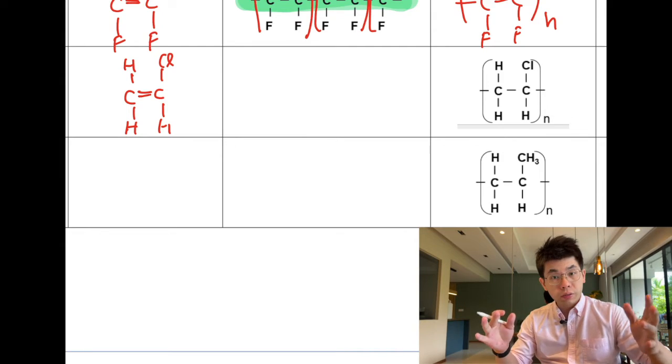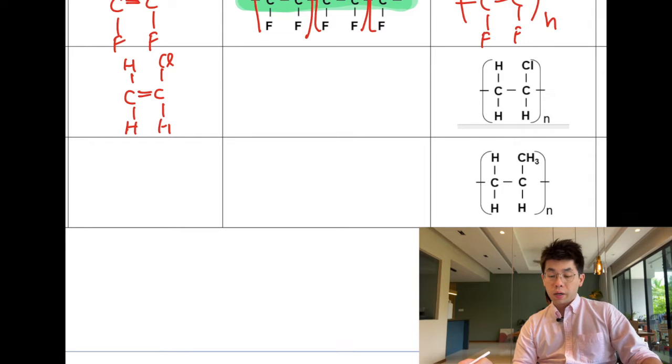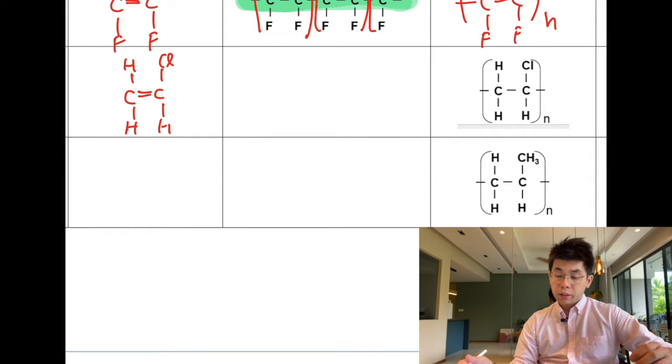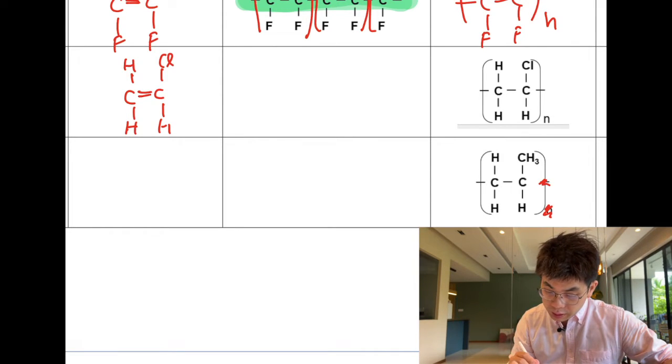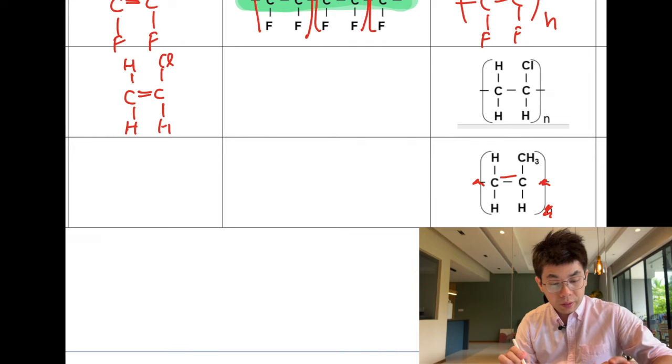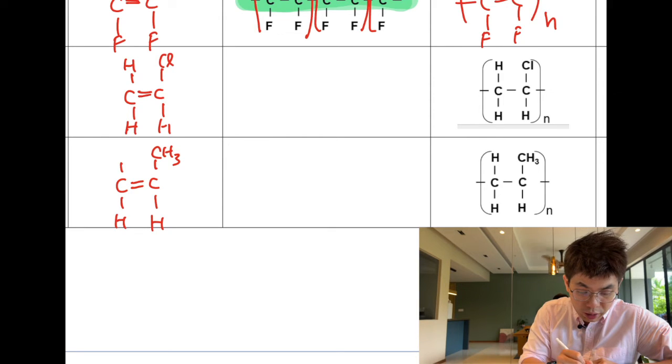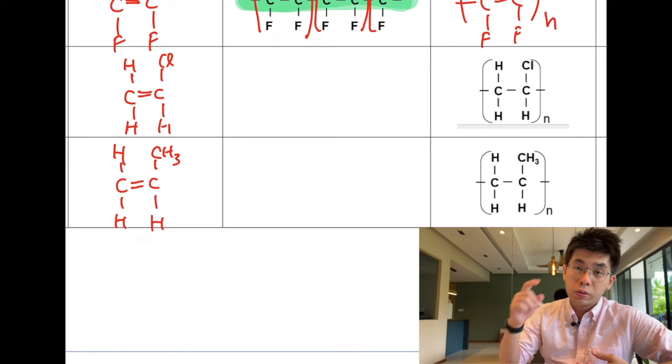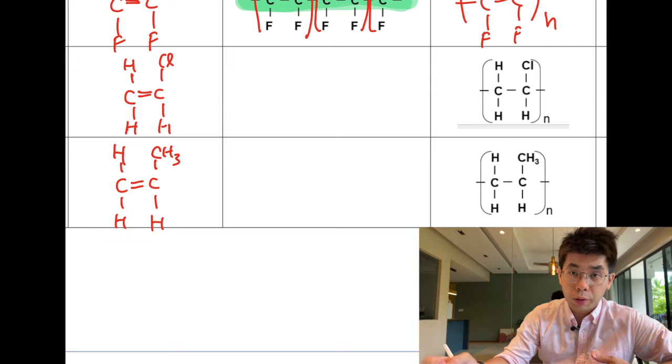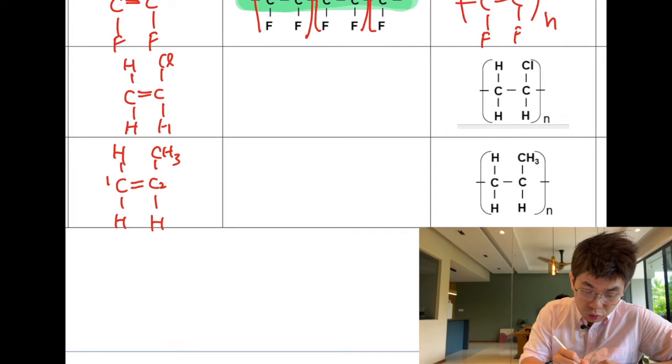Now the last one, maybe you can pause the video here to see whether you are able to draw the monomer. I hope you drew the monomer already. This is an addition polymer, so you can just cancel the n, cancel the sides, cancel the brackets and draw the double bond in. It will look like C double bond C with H, H, H, H, H, H and H. Now what was the name of this polymer?